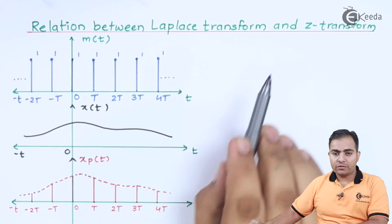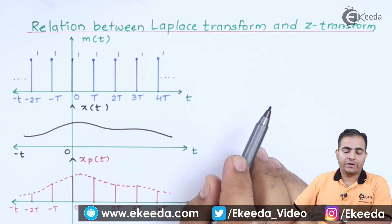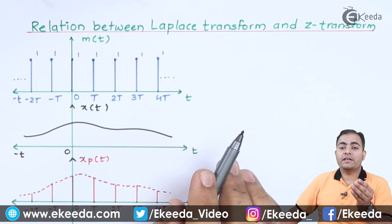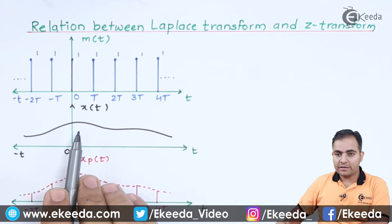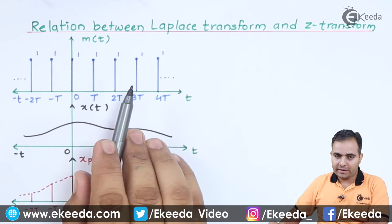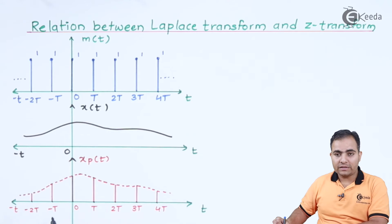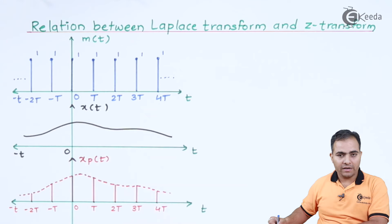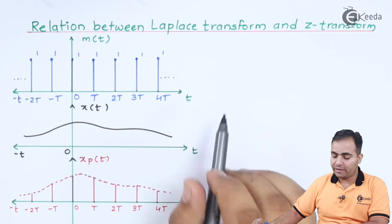Z-transform is used to solve any discrete sample in the Z domain, and Laplace transform is used to convert any continuous time signal into the Laplace domain. We want both a continuous time signal and a discrete time signal — when both signals are multiplied with each other, you get the response in the Z domain. This is the graphical approach; I'll show you how to perform this relation using a mathematical way.